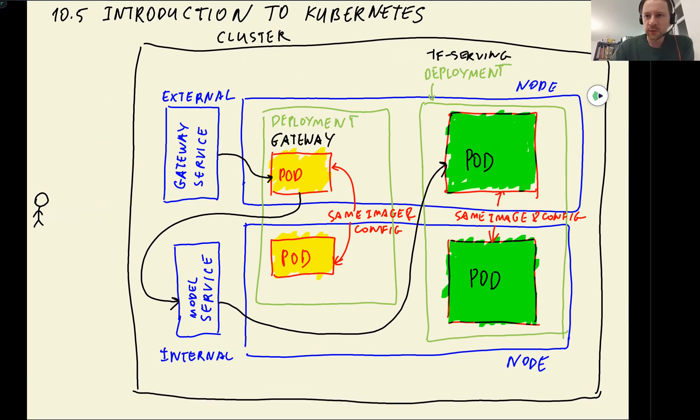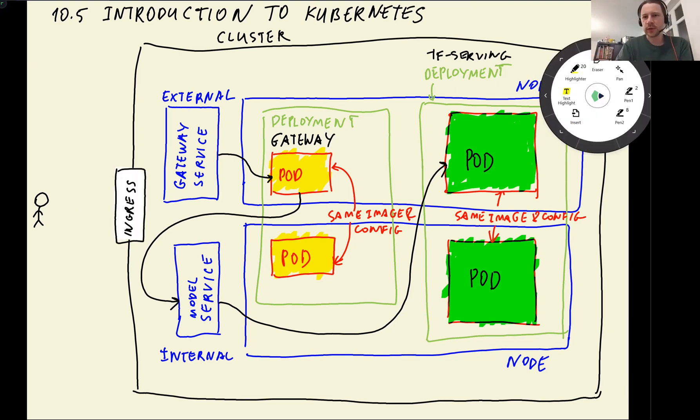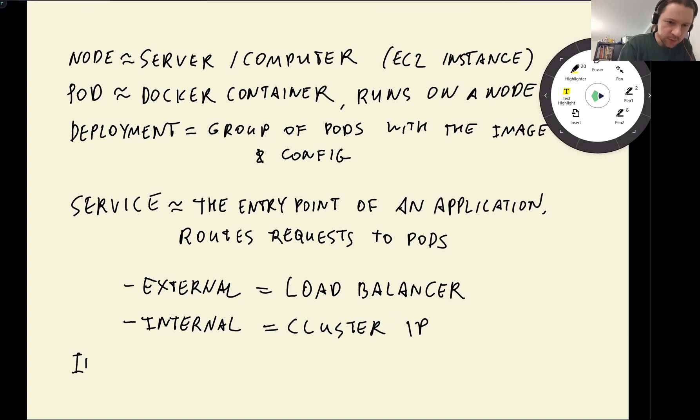It's actually in front of the cluster we have a thing called ingress. This is what actually clients contact first. And then it routes the request to one of the external services. And the rest of things happen as we discussed. Let me write ingress here. This is like the entry point to the cluster.